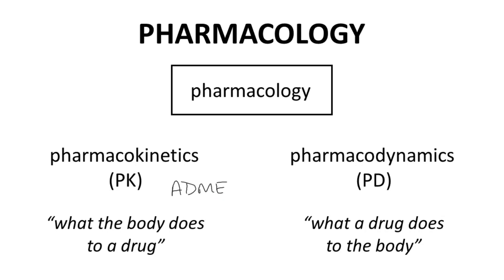In contrast, pharmacodynamics is sometimes described as what a drug does to the body. The word 'does' refers to the therapeutic effect of the drug — the drug's therapeutic benefit. So when we think of regulatory approval of a drug, a drug is approved based on being safe and effective. Both PK and PD help determine whether a drug is effective.